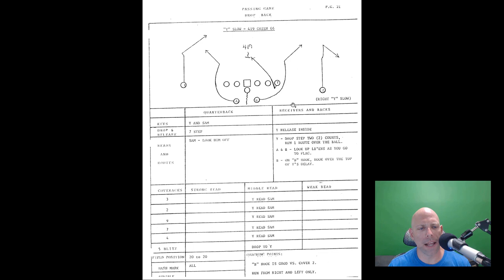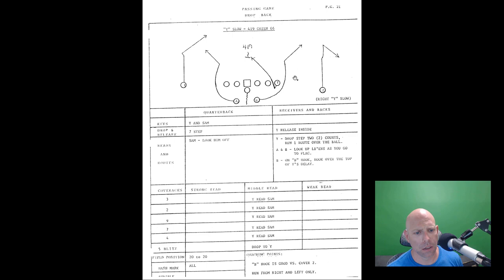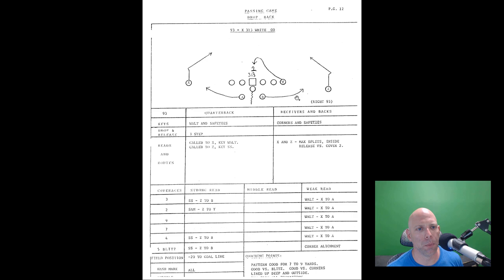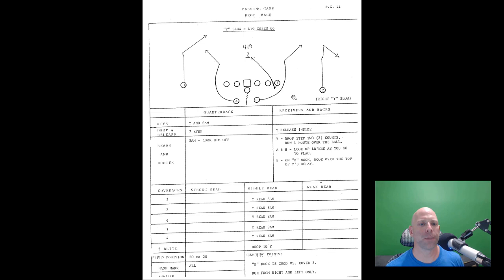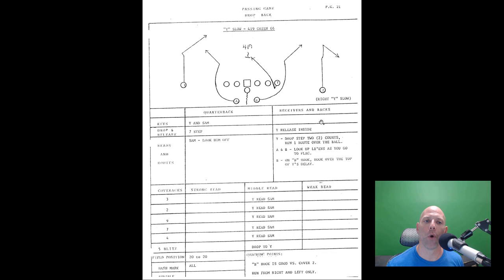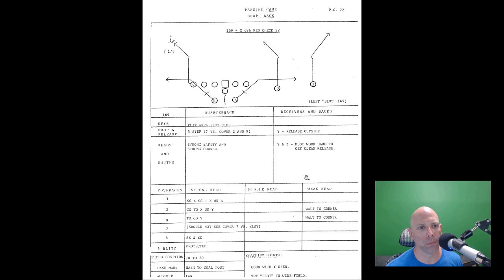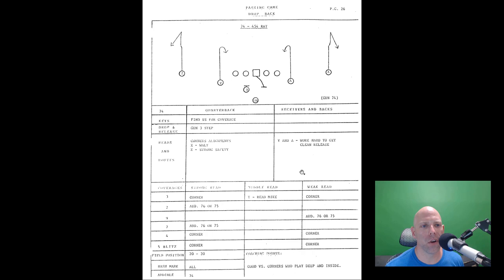Y-slow 419 Green 66: four route out on the outside, the Y runs a one (lookie) - drop-step two counts then run a one route over the ball, essentially a wide receiver delay releasing after a pass-protection look. Green is seven-step protection. The X runs a nine (post) to the backside. Backs run 66 corner routes out of the backfield.